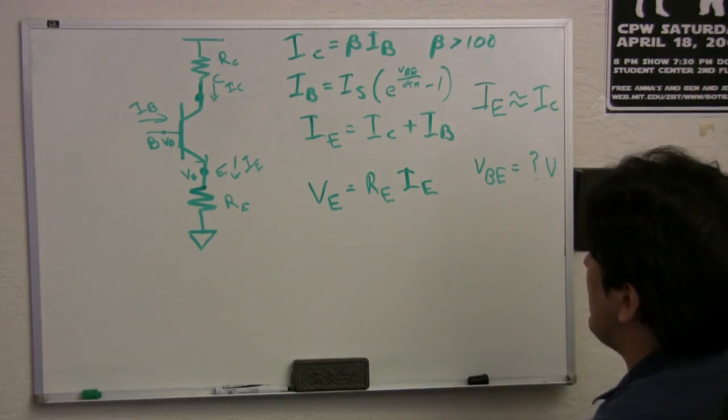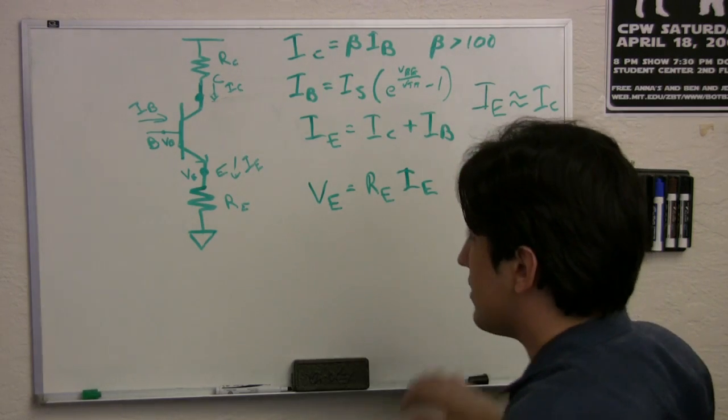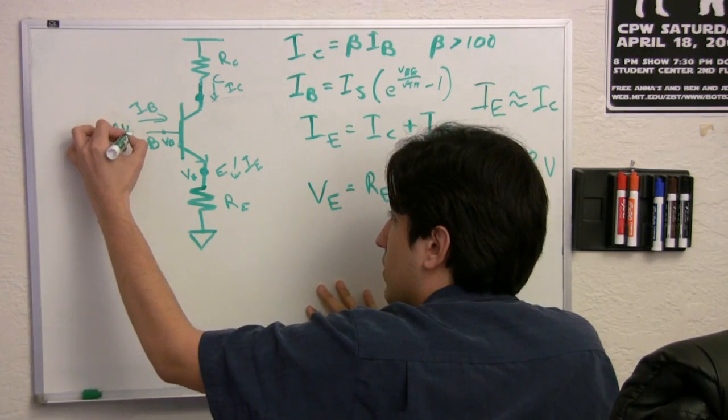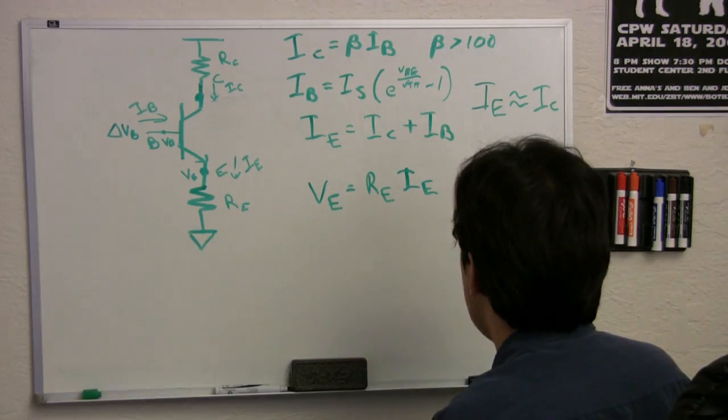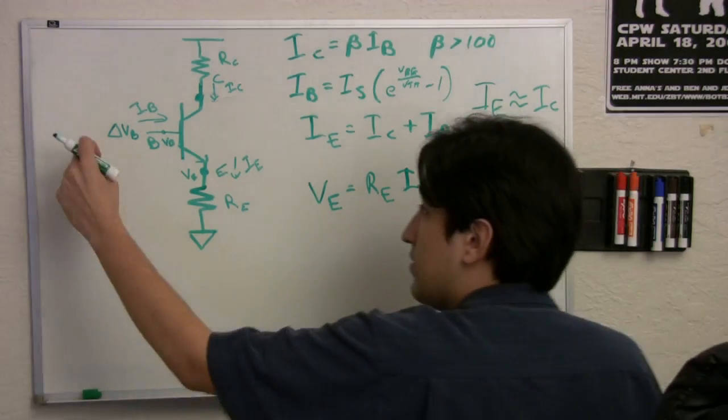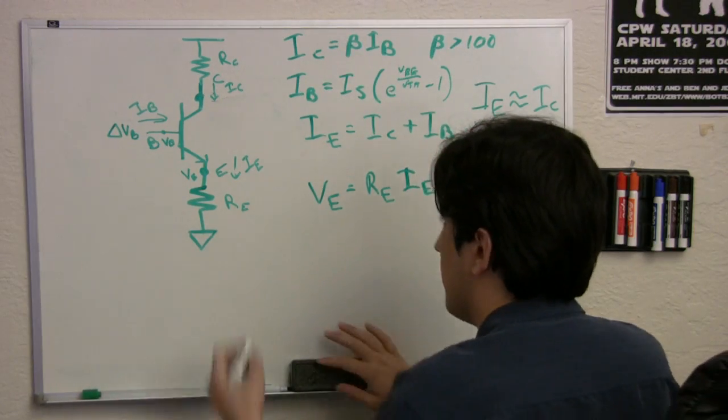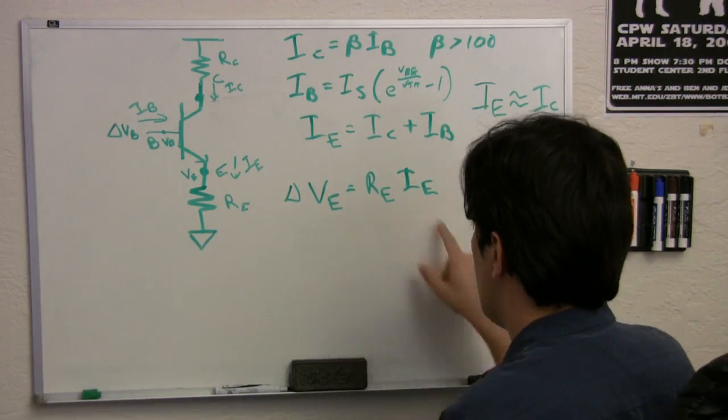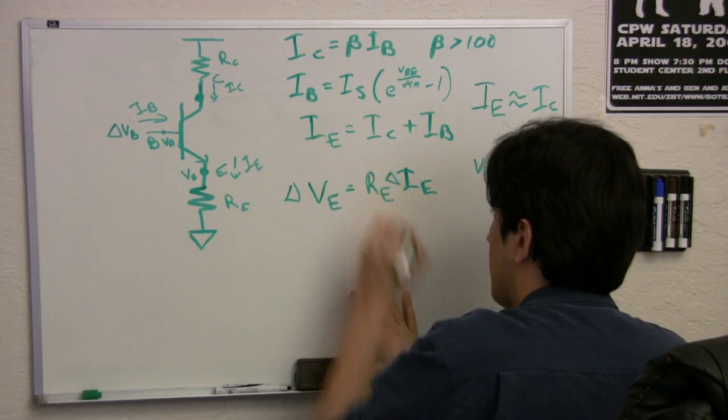Okay, so if we can say that IE is approximately the same as IC, then we can start wiggling these voltages and seeing what happens. So say, for example, that I put a delta VB. I change VB by just a little bit. Well, I already managed to convince you that VBE stays approximately the same. So if I change VB by some amount, VE is going to change by just about the same amount. So make a VB, and I get a delta VE. Well, since V equals IR, and that's always true, this delta in VE causes a delta in IE.